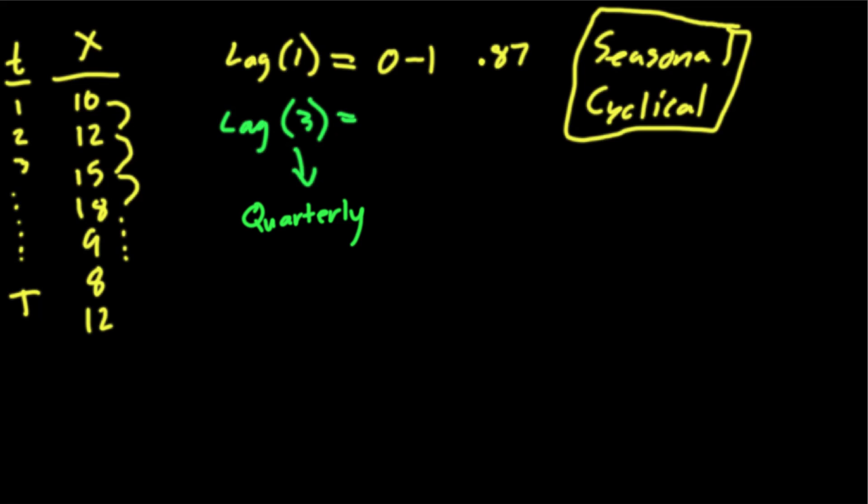But lag three instead of having 10 to 12, it would be lag of three which would be 10. This would be one, two, three. So this piece here would be one lag 10 to 12, and then the next one would be 12 to 9, and then it would be 15 to 8. And you get some correlation here. So let's say in this case our value is going to be 0.95. So this would be a really good indication there's a high correlation between values three lags apart.